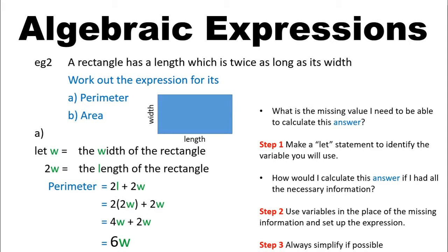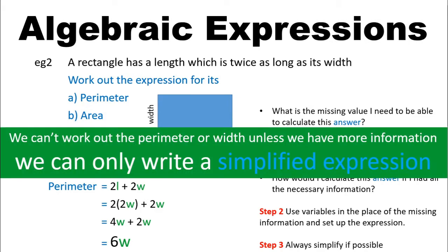Now, unfortunately, unless I know what the width is, that's as far as I can take it. We can't work out the perimeter or the width unless we have some more information. If they told us the width, we could work out the perimeter. Or if they told us the perimeter, we could work backwards to find the width. But that would make this expression an equation because it would be set equal to something. If it's just an expression with some unknown value, all we can do is simplify or rearrange it. So we've got our answer: 6W.